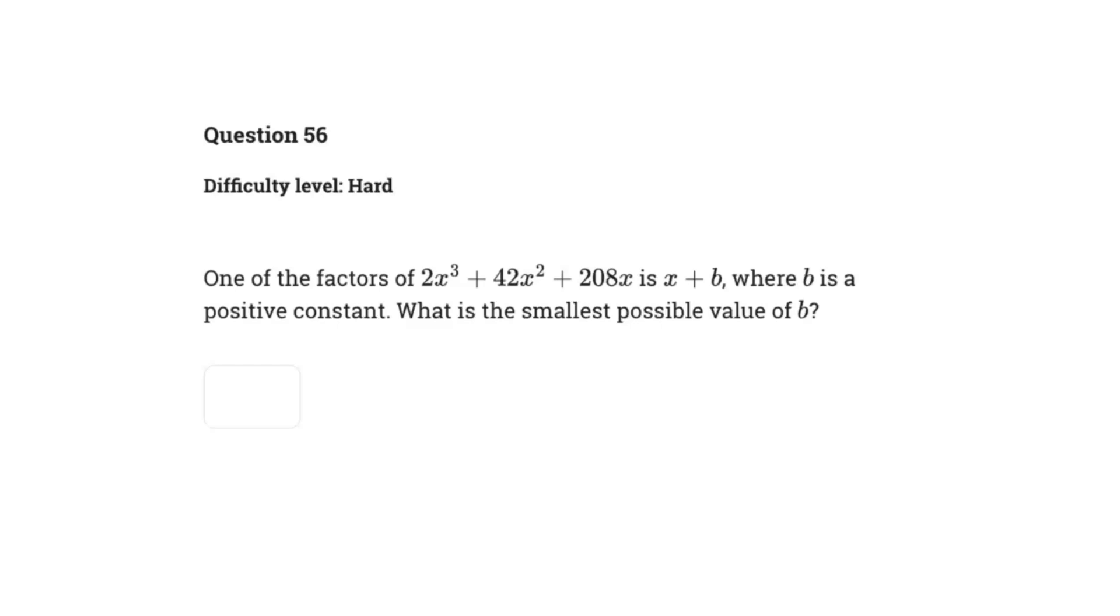All right, everyone, welcome back to another SAT math video. So this one says one of the factors of 2x cubed plus 42x squared plus 208x is x plus b, where b is a positive constant. What is the smallest possible value of b?